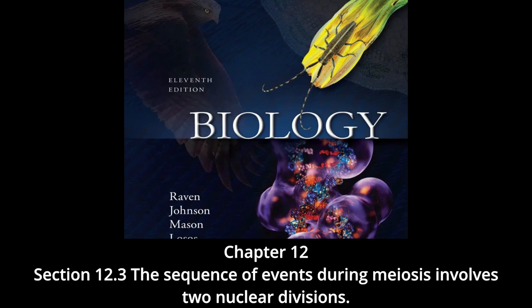Anaphase one: in anaphase one, the microtubules of the spindle fibers begin to shorten. As they shorten, they break the chiasmata and pull the centromeres toward the poles, dragging the chromosomes along with them. Because the microtubules are attached to kinetochores on only one side of each centromere, the individual centromeres are not pulled apart to form two daughter centromeres as they are in mitosis. Instead, the entire centromere moves to one pole, taking both sister chromatids with it.